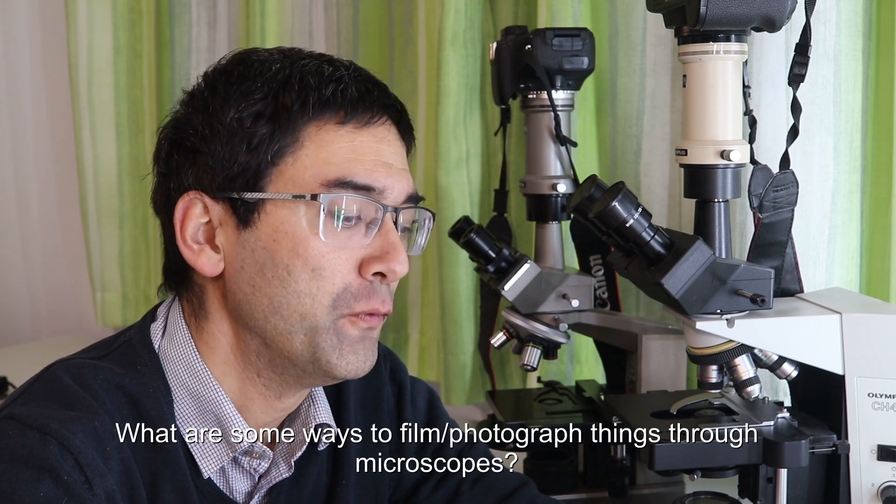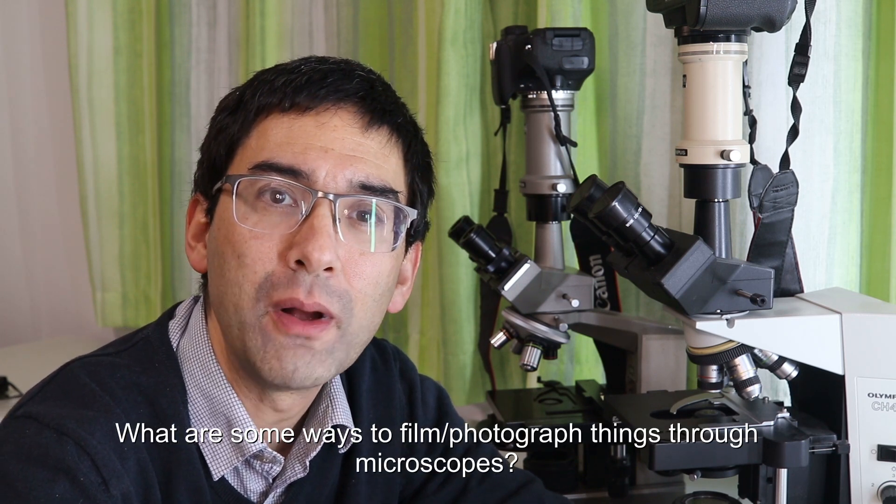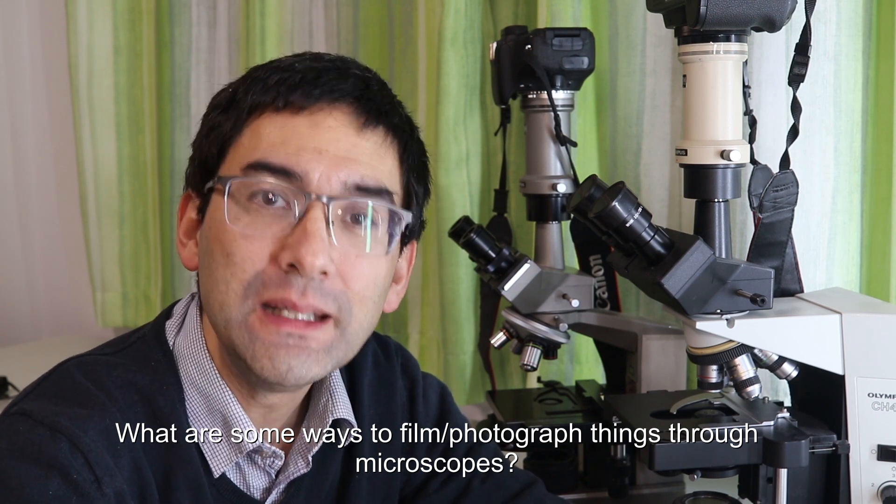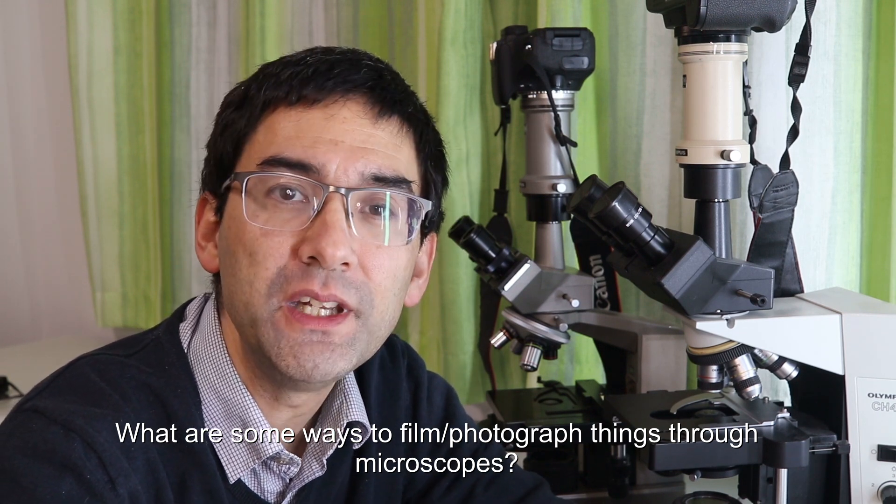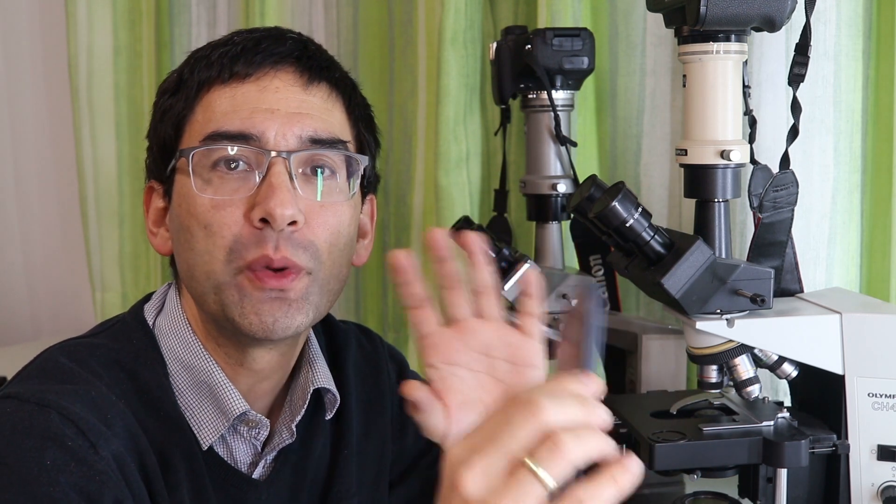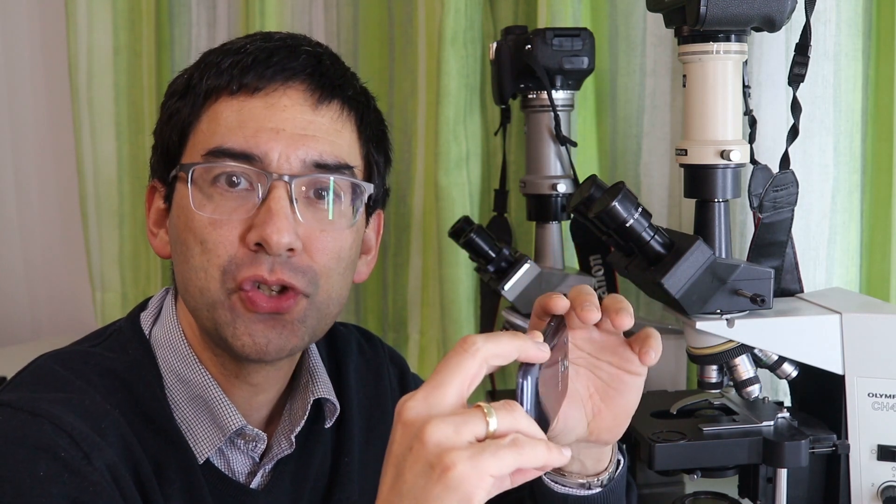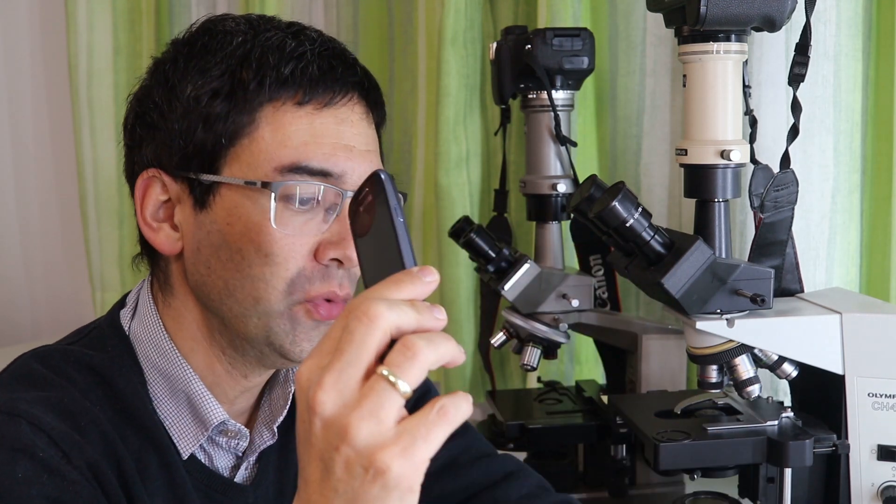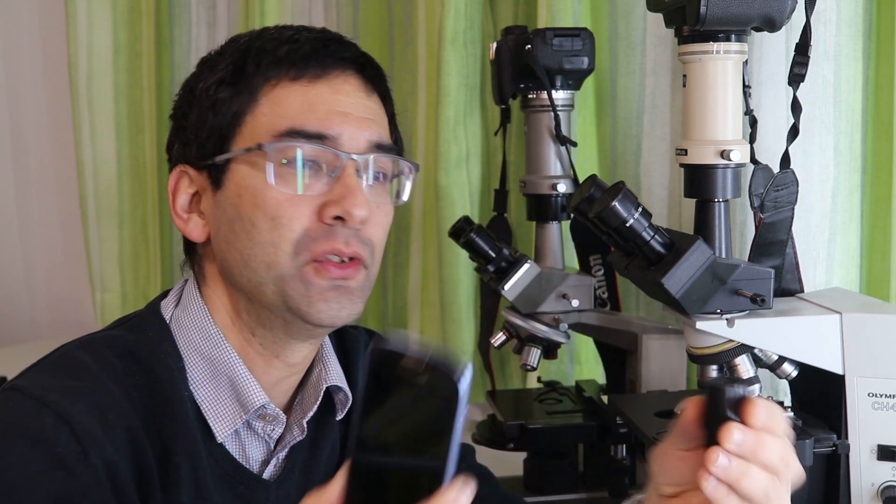So the first question here is what are some ways to film or photograph things through a microscope. First of all I did make a separate YouTube video on that, but one thing that I simply would recommend and that's probably the easiest way is simply to use a mobile phone to take pictures without an adapter, without any extra hardware. Just try taking pictures and videos using a mobile phone and in order to do this I simply also want to tell you what you have to do.